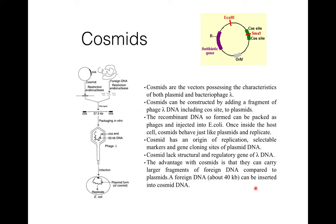Cosmids are vectors which possess characteristics of both plasmids and bacteriophage lambda. They are constructed by combining certain features of plasmids and the cos sites of phage lambda. They are very attractive for constructing libraries of DNA fragments of eukaryotes because they have the capacity to accommodate large fragments of DNA. The recombinant DNA formed can be packaged as phages and injected into E. coli, and once inside the host cell, the cosmid behaves like a plasmid and starts replicating.